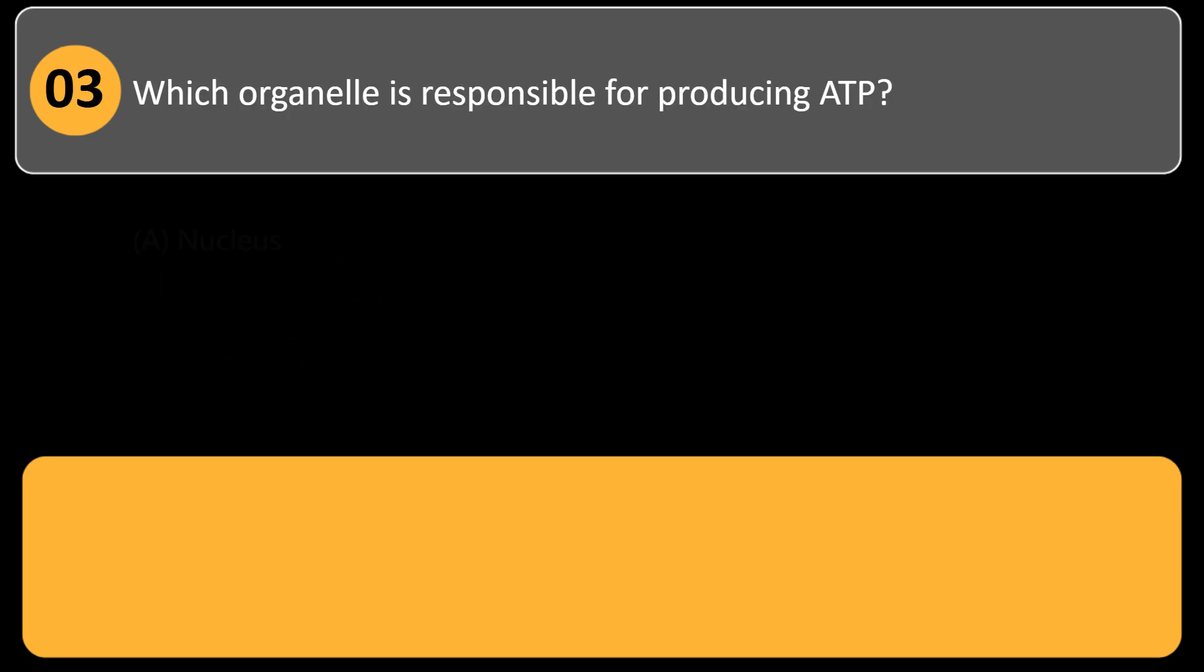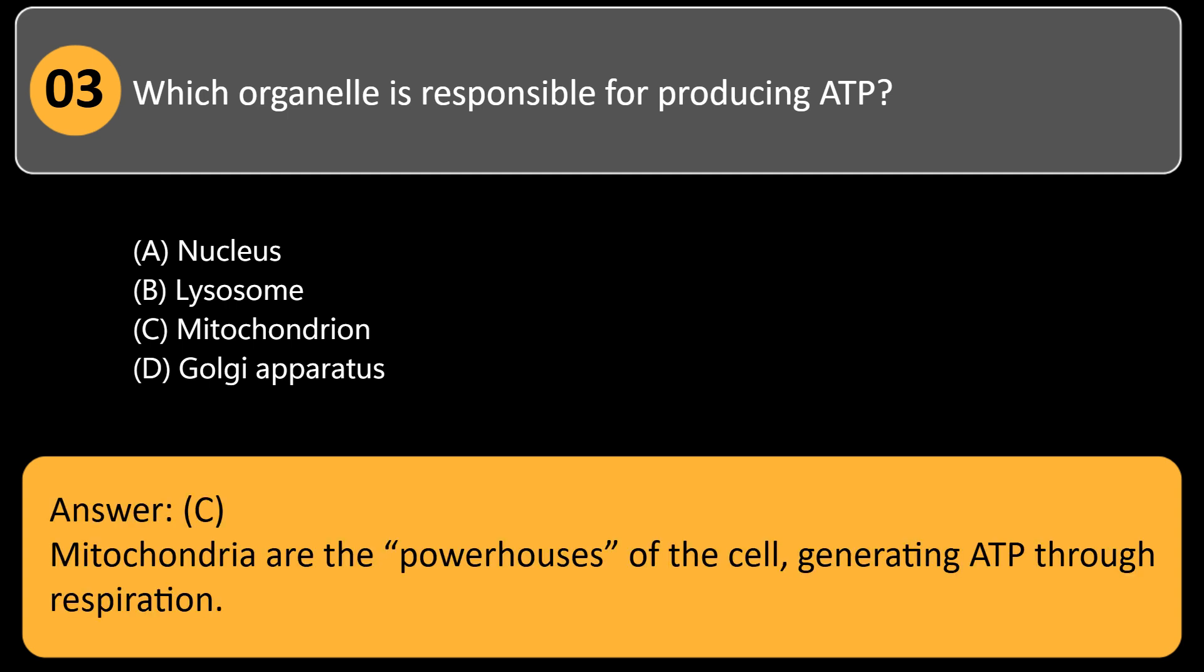Which organelle is responsible for producing ATP? A. Nucleus, B. Lysosome, C. Mitochondrion, D. Golgi apparatus. Answer: C. Mitochondria are the powerhouses of the cell, generating ATP through respiration.